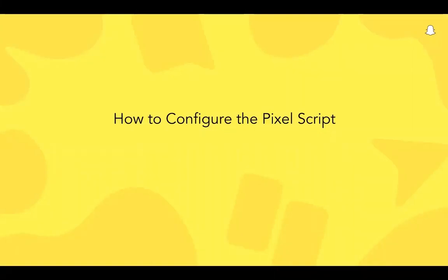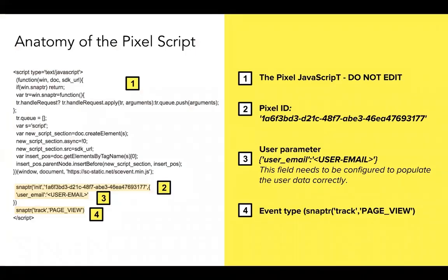Now that you have your pixel code copied and ready to go, let's see how you can configure the script and customize it for your website. First, let's start by understanding the anatomy of the pixel script. The pixel script has four main parts that you can see highlighted here on the screen. The first part is the core body of the JavaScript — you do not need to edit or customize this portion of the script. Part two shows the pixel initialization call. It contains the pixel ID, which is a unique identifier for your pixel linked to your ad account ID. When you copy the pixel code from Ads Manager after hitting Create My Pixel, the code will already contain the correct pixel ID unique to your ad account. In this case, the pixel ID is a string starting with 1A6F.